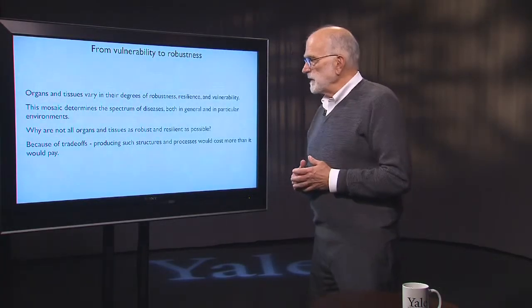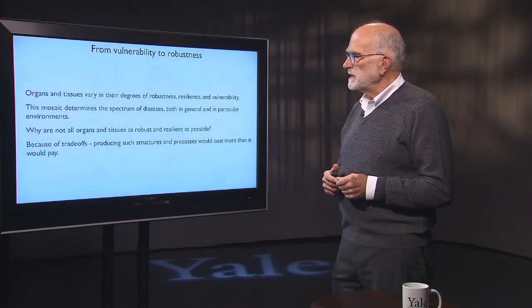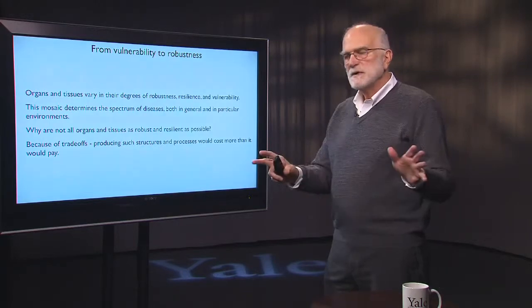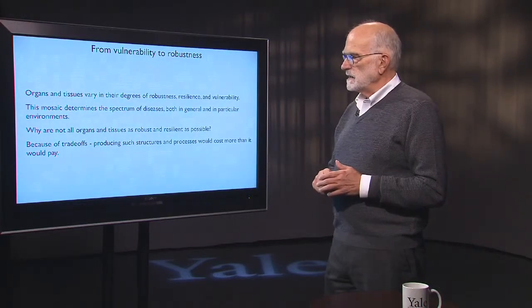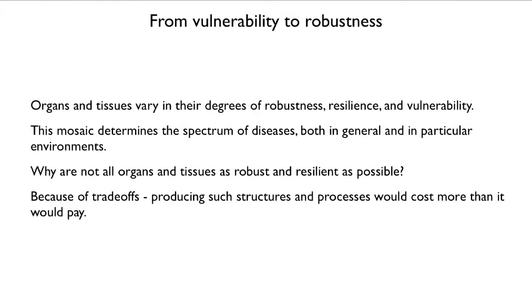Organs and tissues vary in robustness, resilience, and vulnerability. And it is this mosaic that determines the spectrum of diseases. Not all organs and tissues are as robust and resilient as possible, and the reason for that is quite interesting — it's because they would cost too much. In other words, if you try to make one thing really good, you neglect something else.